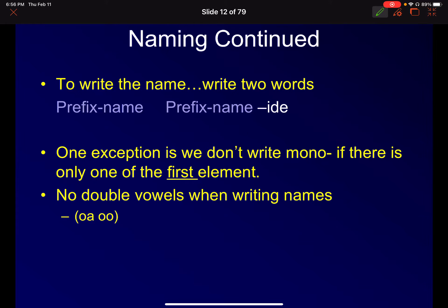So the naming convention, you write down the prefix. In other words, how many of the first atom is there, the name of the atom, then the prefix for the second atom. In other words, how many of the second atom there are, the name of the second atom with the name changed to ide. And there you go. So like, dihydrogen monoxide, H2O, di for two hydrogens, dihydrogen monoxide, because there's one oxygen. So again, it's dihydrogen monoxide.